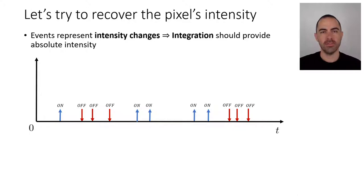Well let's try to recover such pixels intensity and we know that events they represent intensity changes. So whenever we have one of these arrows painted here it means there was a brightness increase of size c or brightness decrease of size minus c. Therefore in principle if these are intensity changes we could just integrate them and we should be able to obtain absolute intensity. So let's try to do that.